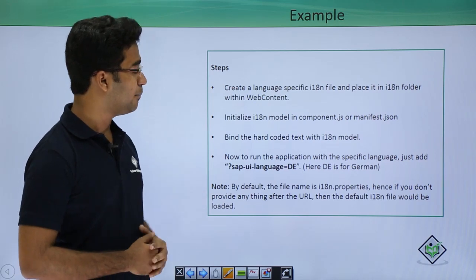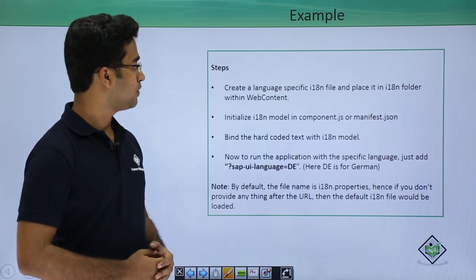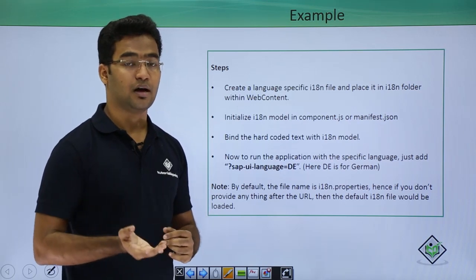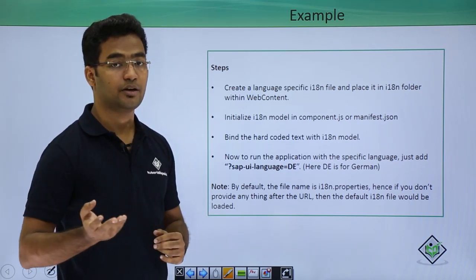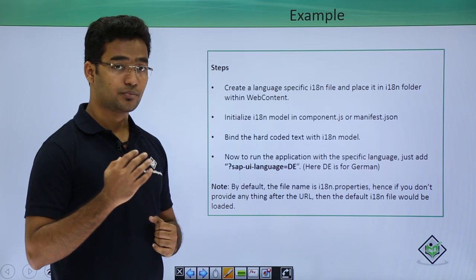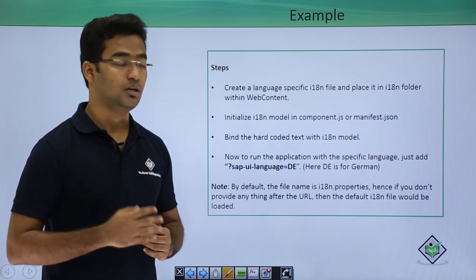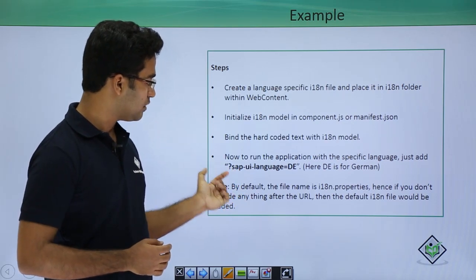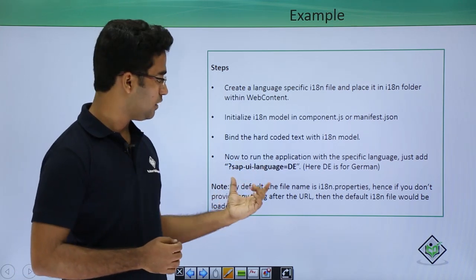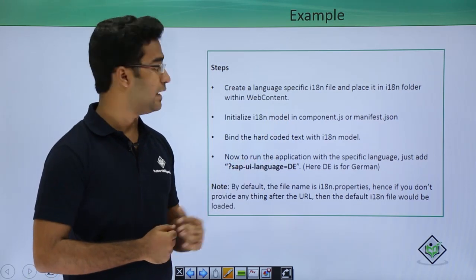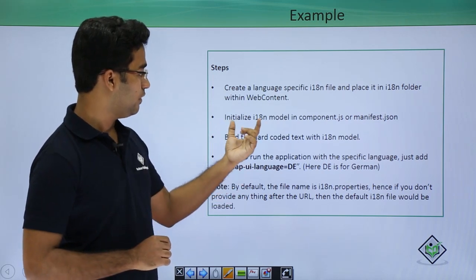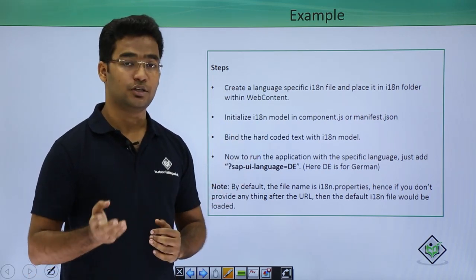All these scenarios and the example are explained in the video. First, we create an i18n folder and within this folder we mention the i18n files. By default, the i18n.properties file runs. If we want to specify another language, we add a query parameter such as sap-ui-language equals to 'de', which means it would find the de file in the i18n folder — that is i18n_de.properties. We initialize the i18n model in component.js or manifest.json.